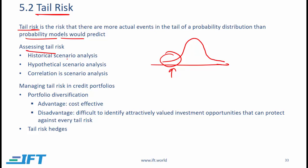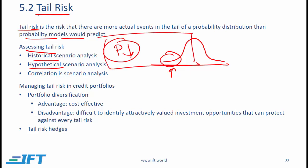The most commonly used tool to assess tail risk is scenario analysis, which can be historical or hypothetical. With historical scenario analysis, we look at unusual events from the past that did happen and evaluate what would happen to a portfolio if similar events occurred again — for example, modeling the 2008-2009 crisis or replicating what happened with high yield bonds in the 2000-2002 time frame. These scenarios are plausible but unusual events with significant negative impact on bond prices.